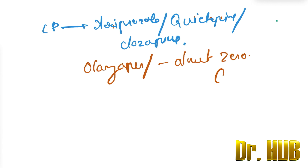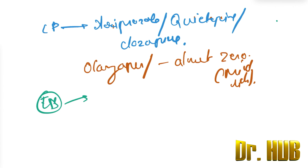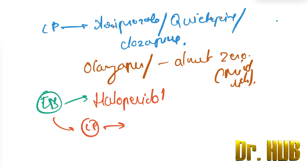Finally, we look at extrapyramidal symptoms, or EPS. The maximum EPS risk is caused by haloperidol, while the least potential is seen with clozapine and quetiapine.